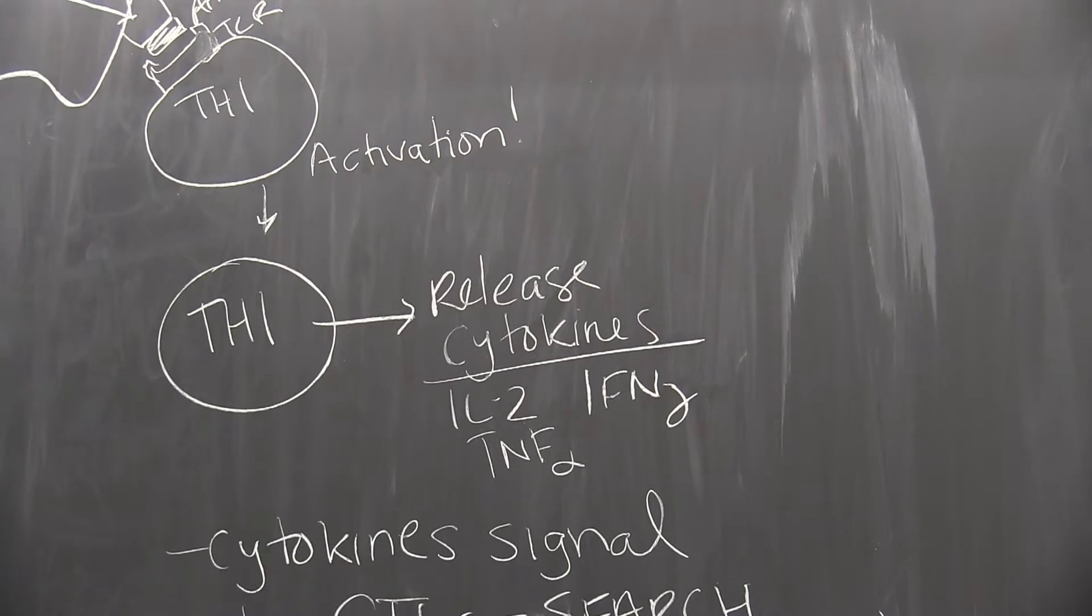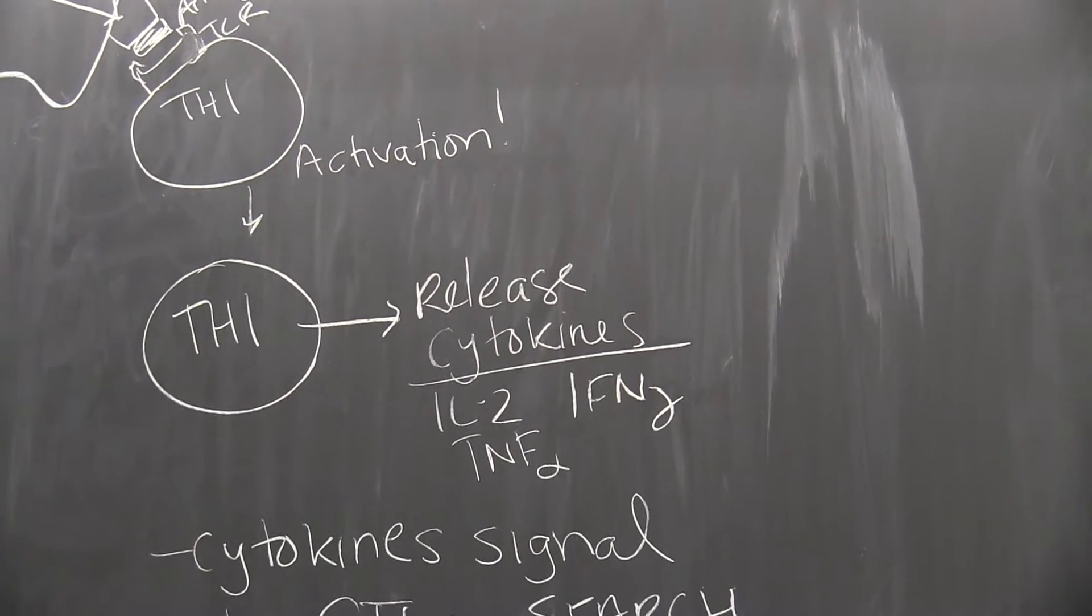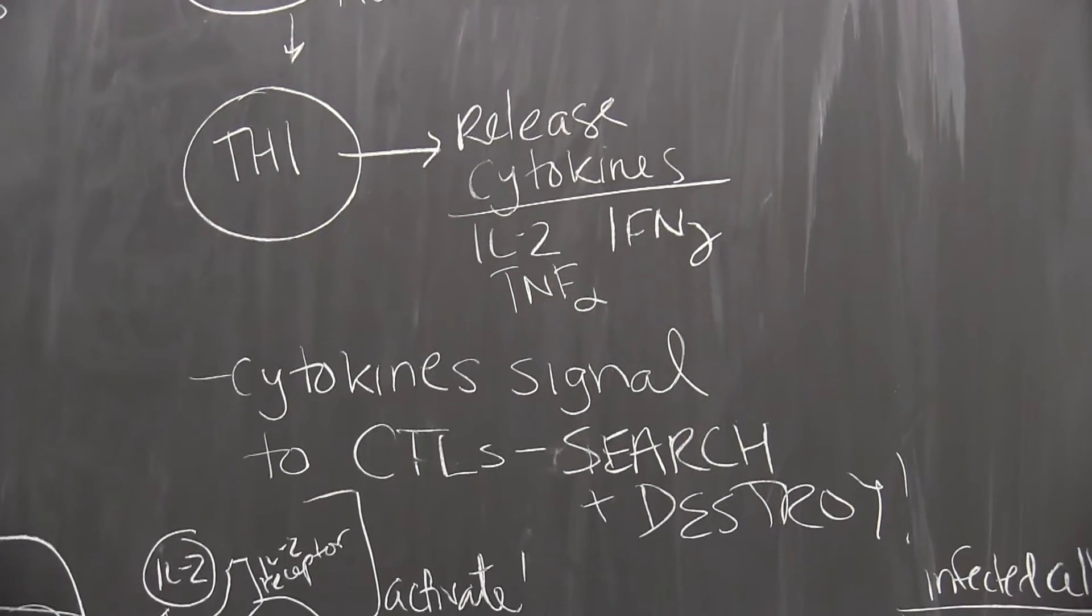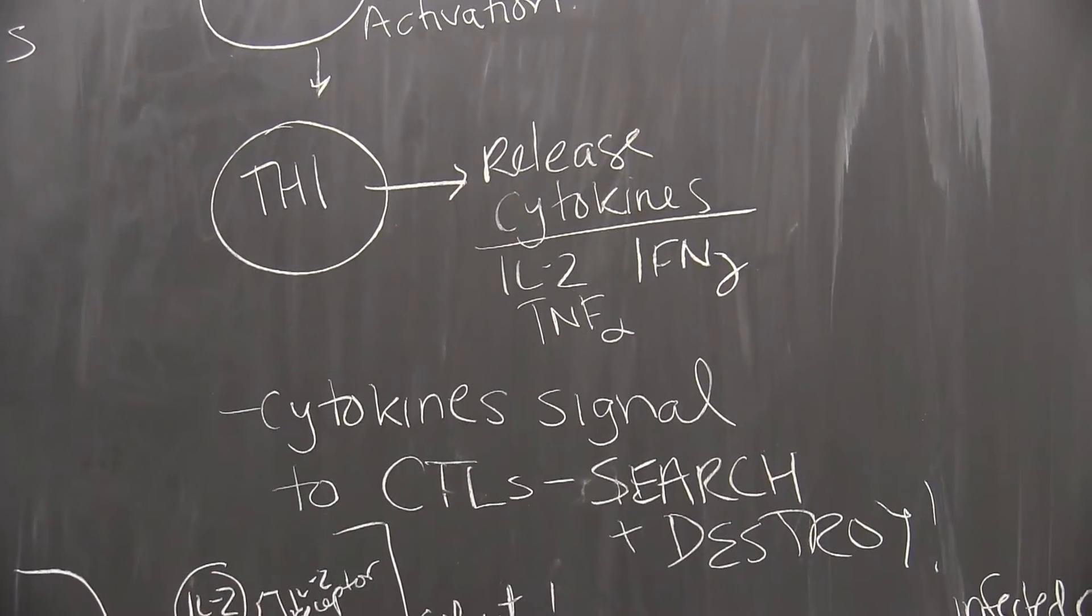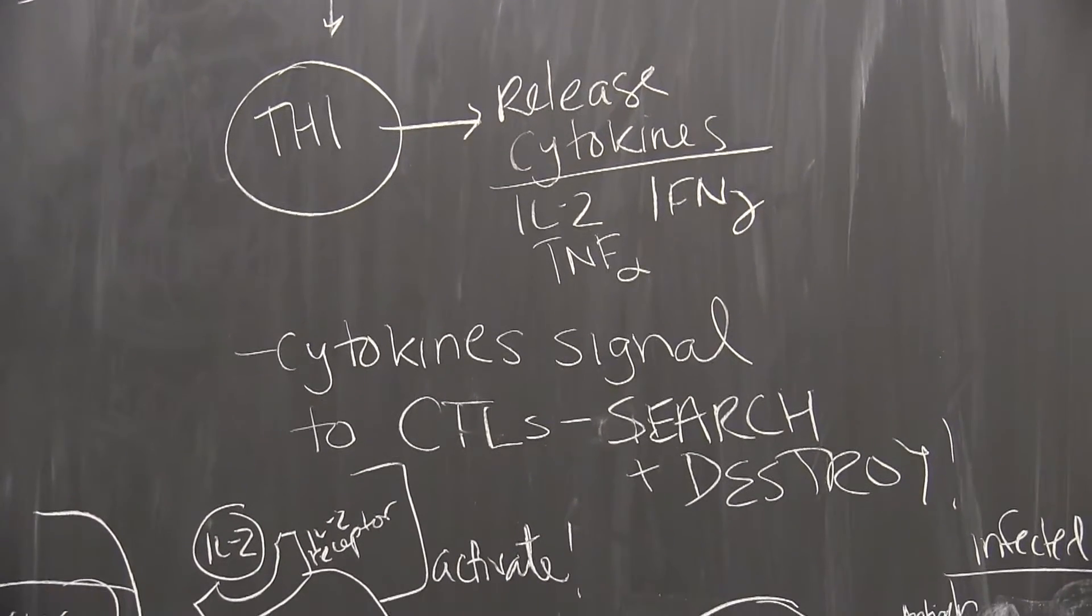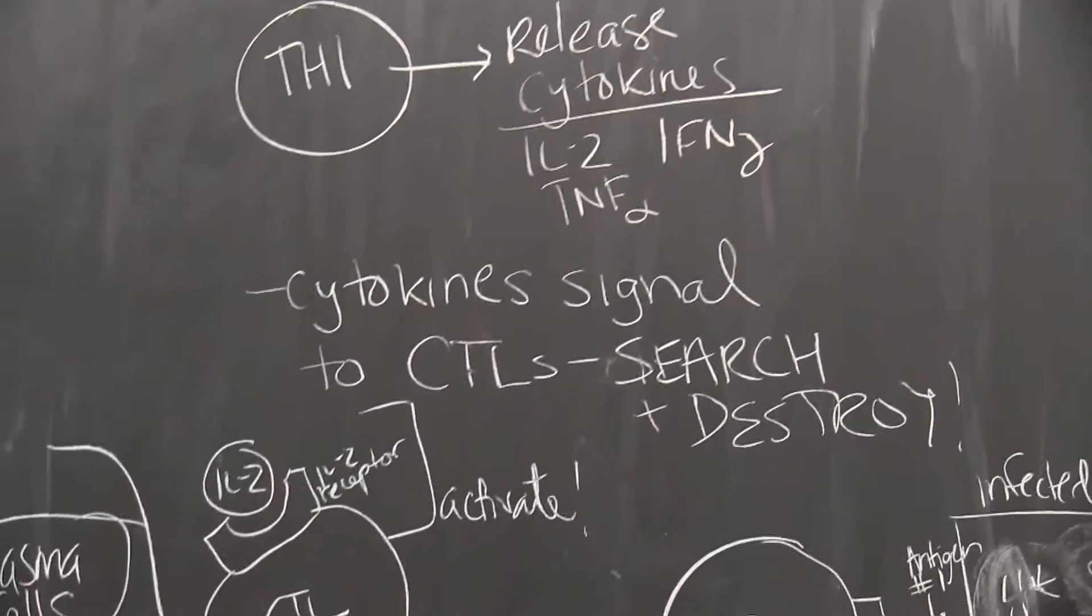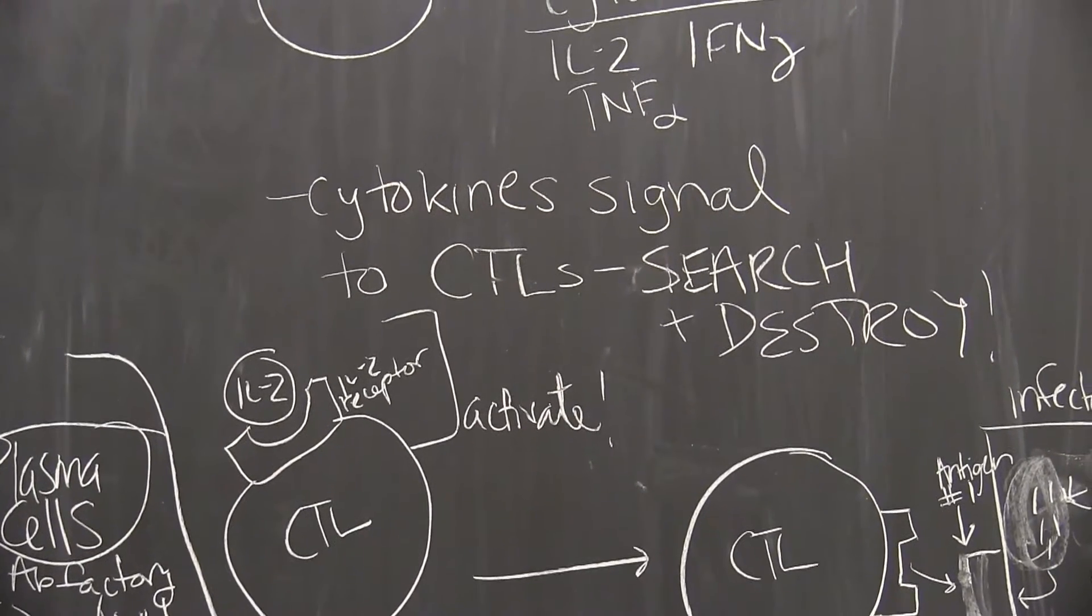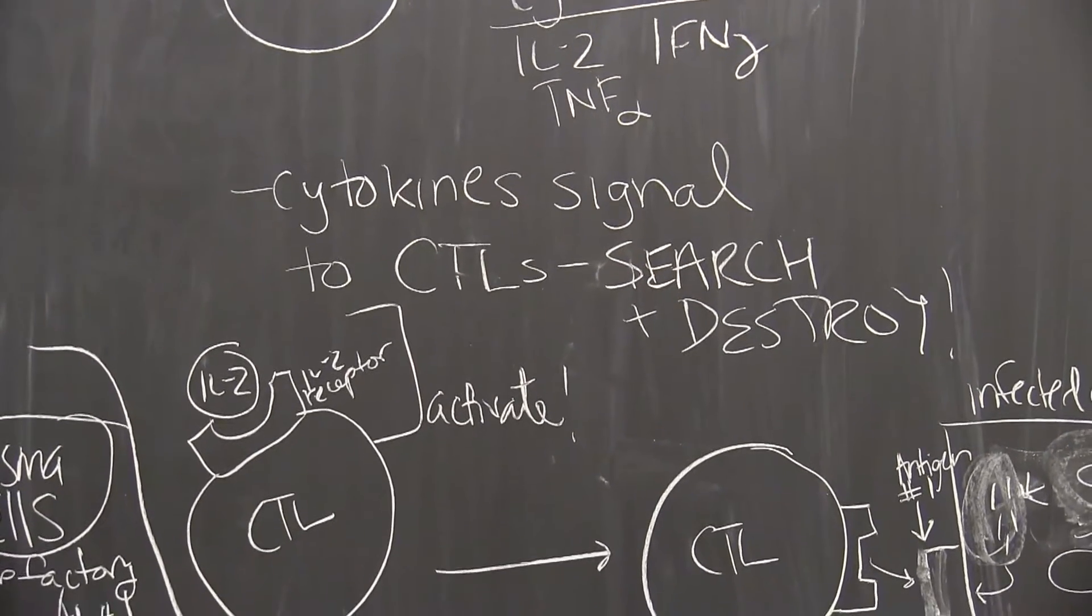Remember, cytokines are immune signals. These signals are proteins, and so everything that we've learned about proteins applies to this. And it's really important to remember that helper T cells, both TH1 and TH2, don't directly bind and activate killer T cells. But it's these cytokines that are the things that signal to CTLs, killer T cells, to activate and search and destroy for their particular infected cell with that particular antigen.